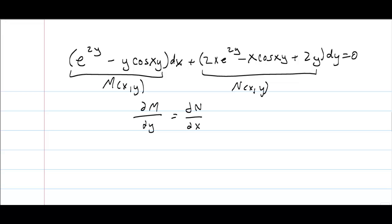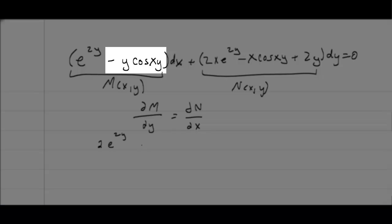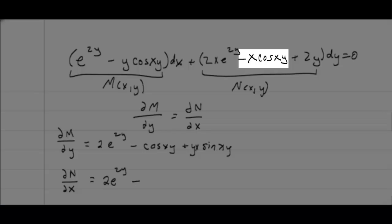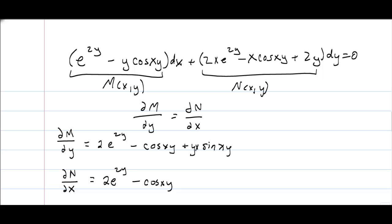The partial of M with respect to y: the first term gives 2e^(2y), and the second term -y·cos(xy) gives +xy·sin(xy) — because the derivative of cosine is negative sine, giving a positive, with an extra x from the chain rule. For the partial of N with respect to x: the first term gives 2e^(2y), and the second term gives -y·cos(xy) + xy·sin(xy), with the 2y term contributing 0. These two are equal, confirming this is an exact differential.